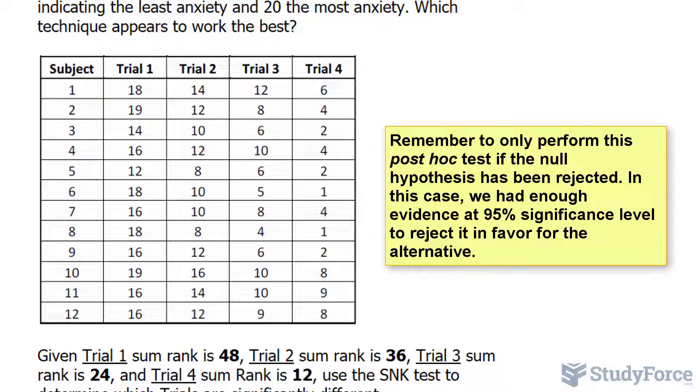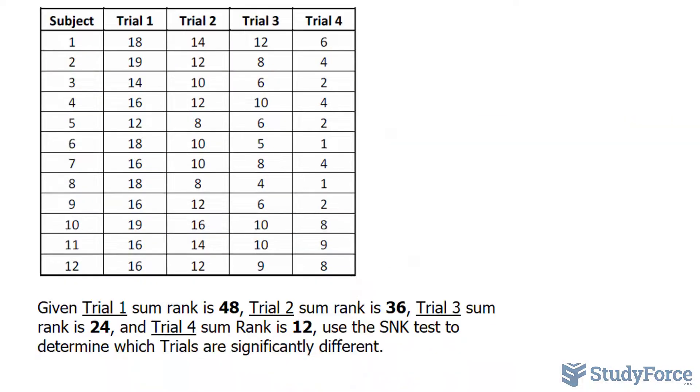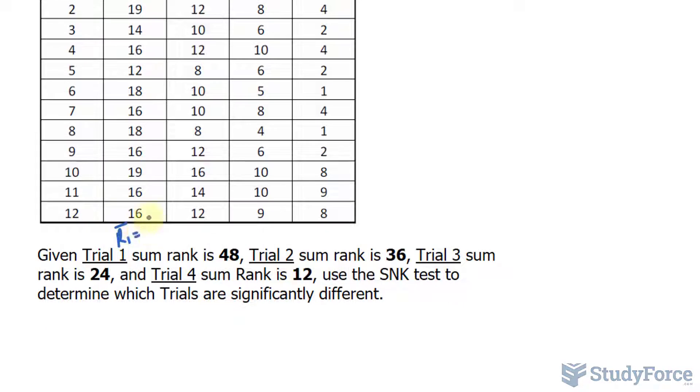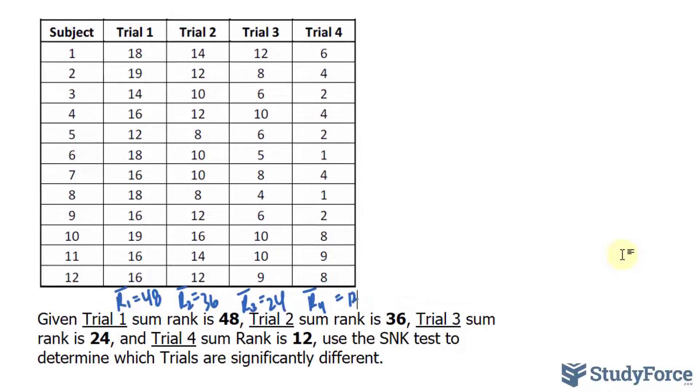Underneath this table, I've written that the sum rank for the first trial is 48, so R sub 1 equals 48. R sub 2 equals 36, R sub 3 is 24, and R sub 4 is 12. We have to find out which of these four trials are different from one another, and here's how that's done.